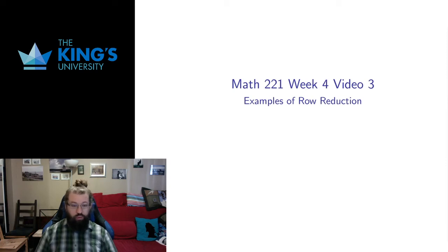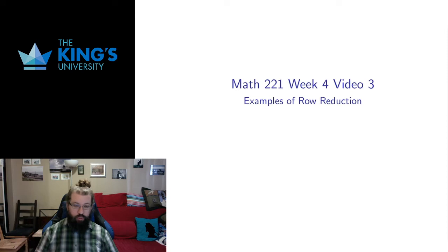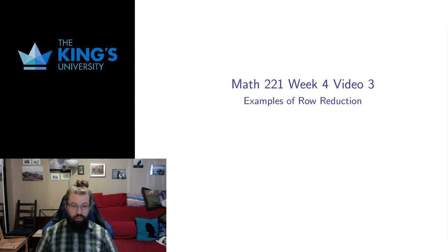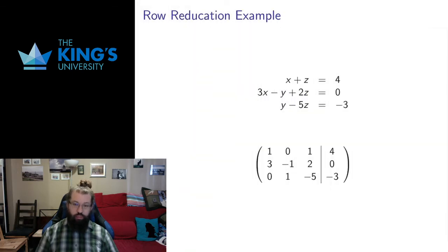Hello and welcome to video three for week four. In the previous video I talked about the theory of the row reduction algorithm — what we're trying to accomplish, translating systems into matrices, row reducing, trying to get reduced row echelon form. A lot of that probably felt pretty confusing. Let's do a bunch of examples to try and make it clear. This is an algorithm that's much easier to see in examples.